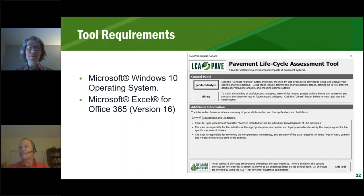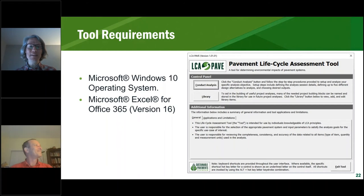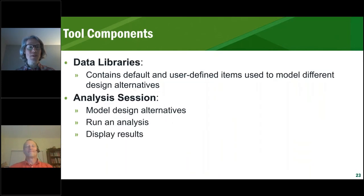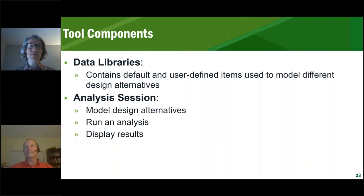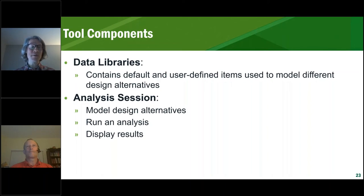I have a few minutes so this is going to go fast — I'm going to use slides rather than crash the tool itself. LCA Pave: this is the starting screen. I'll tell you a little bit about the structure and how people can interface with it. It's based around libraries which contain default data from the database that John just described. Users can add their own data — either copy and edit or put in their own information — to make it more specific to the agency or the region. The user interface is with these data libraries through what we call an analysis session, where you can model design alternatives and display results.